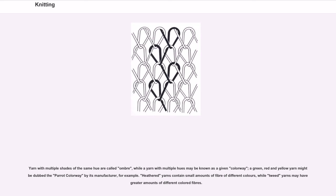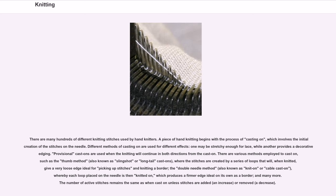There are many hundreds of different knitting stitches used by hand knitters. A piece of hand knitting begins with the process of casting on, which involves the initial creation of the stitches on the needle. Different methods of casting on are used for different effects: one may be stretchy enough for lace, while another provides a decorative edging. Provisional cast ons are used when the knitting will continue in both directions from the cast on.